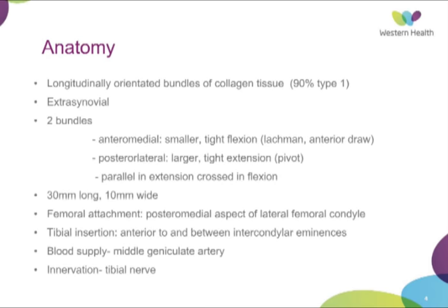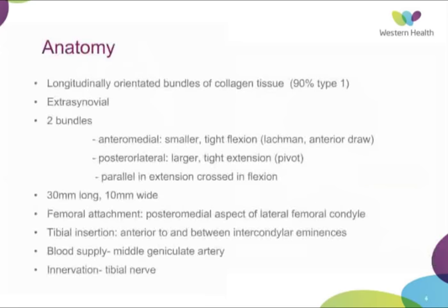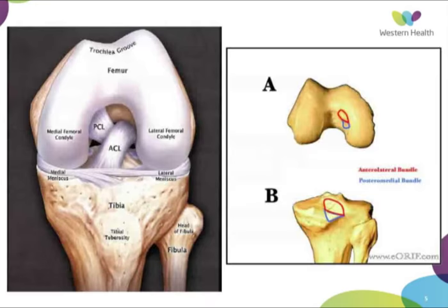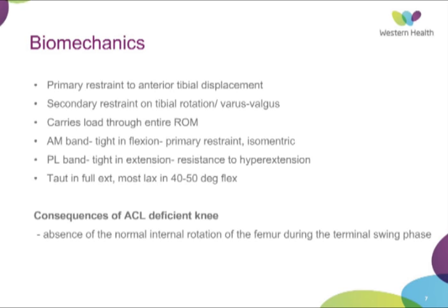The normal native ACL is about 30mm long and 10mm wide. Its femoral attachment is posteromedial on the lateral femoral condyle, and it inserts on the tibial plateau just between the intercondylar eminences. Blood supply is the middle genicular artery, and there is some innervation by the tibial nerve. This just shows your anterior medial and posterior lateral bundles and where they insert.